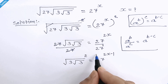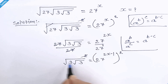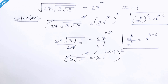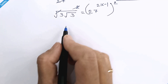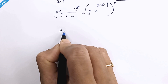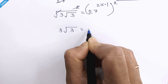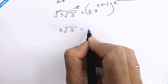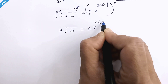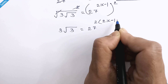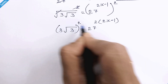We will square both sides again, so this square and square root will be eliminated. We have 3 times square root 3 on the left. We can multiply the exponents on the right, so it will be 27 raised to 2 times (2x minus 1).